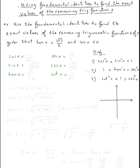The only thing that's given is the tangent, which is square root of seventeen over two. Since tangent is given, the only identity that involves tangent is number two: one plus tangent squared equals secant squared. That tells us we can find secant squared, so let's use that one.